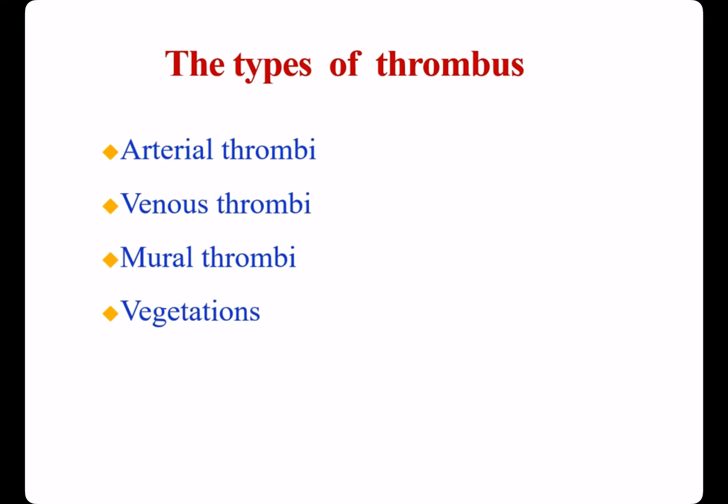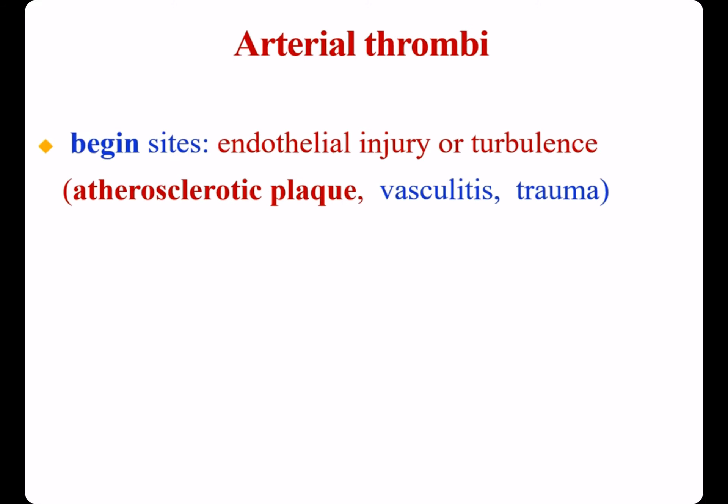According to the location of thrombus, it includes arterial thrombus, venous thrombus, mural thrombus, and vegetation. Arterial thrombus typically begins at sites of endothelial injury or turbulence, such as trauma, vasculitis, or atherosclerotic plaque.